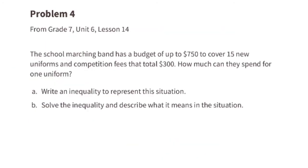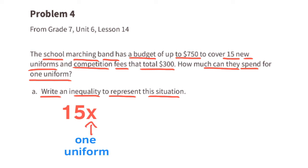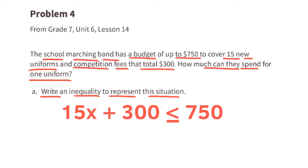Problem number 4, from 7th grade Unit 6 Lesson 14. The school marching band has a budget of up to $750 to cover 15 new uniforms and competition fees that total $300. How much can they spend for one uniform? Part A: write an inequality to represent this situation. Let x represent the price for each uniform: 15x plus $300 for competition fees must be less than or equal to $750.